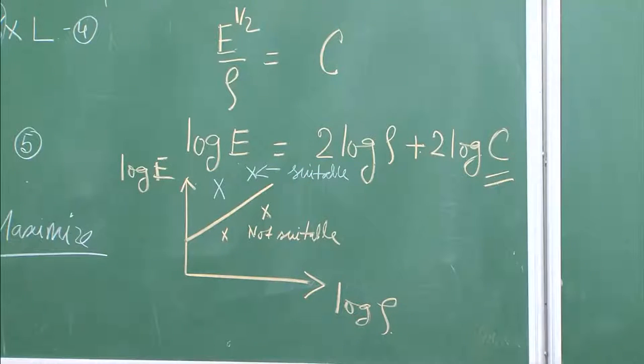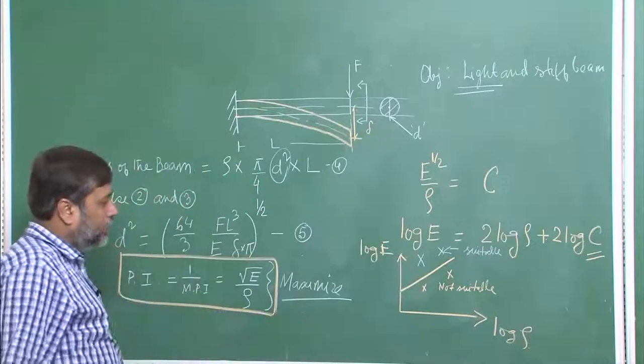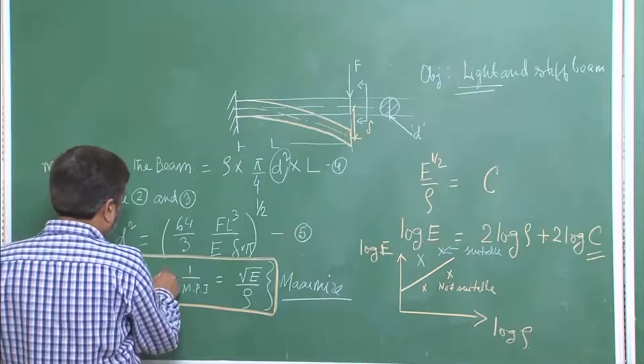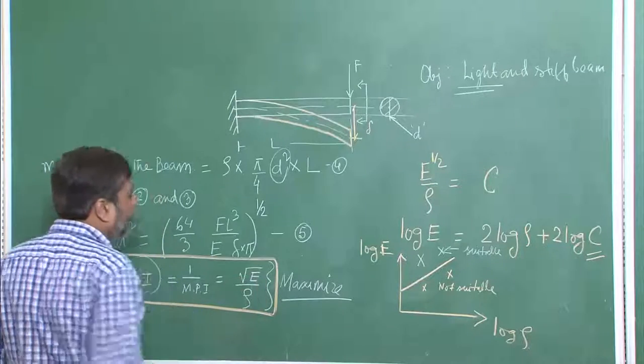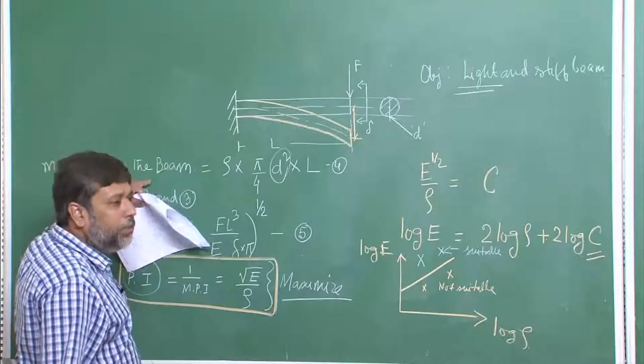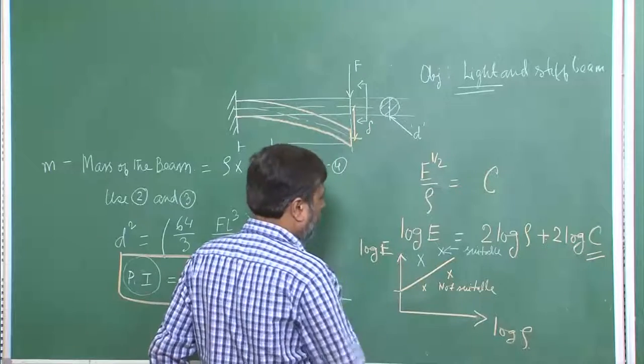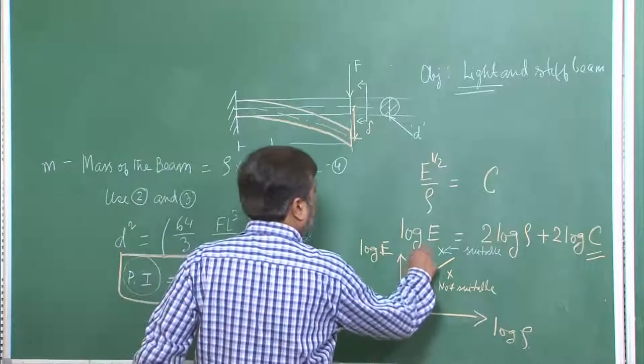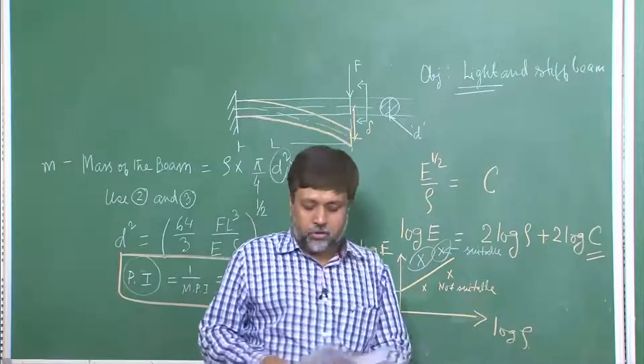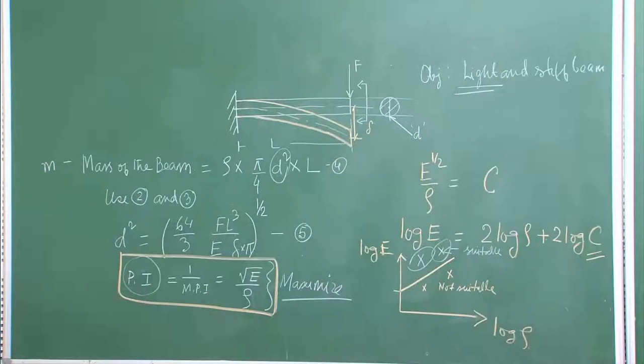Thus, if we have a modulus of elasticity versus rho graph in the Ashby chart corresponding to various materials, and I am looking for a high value of square root of E by rho, because the higher this is the lighter will be the beam. If I know the cutoff point, I can search for materials and find out what will be a very good material for our application. This is precisely what is done using the Ashby chart. Let us go back to the Ashby chart to do this part of the work.